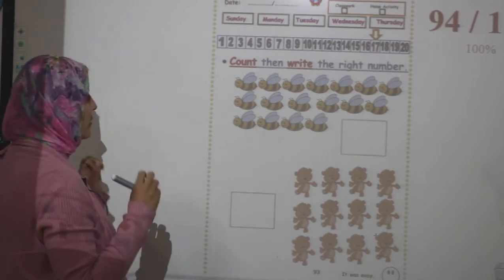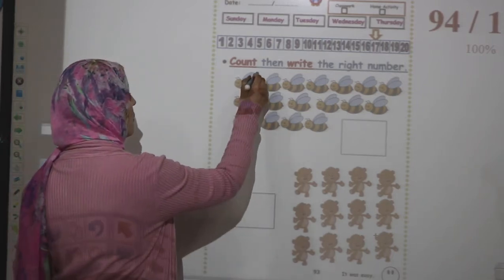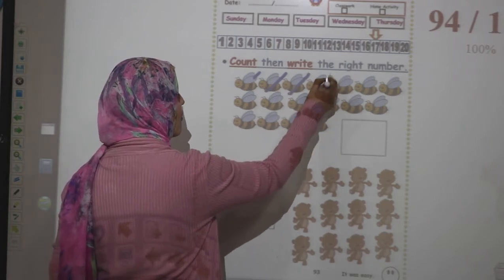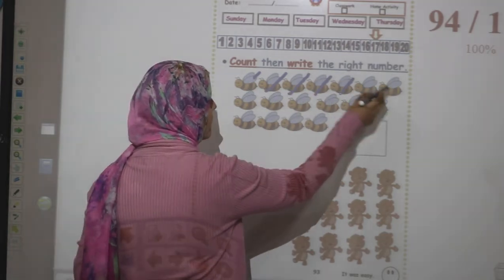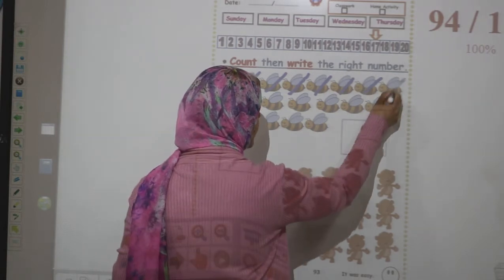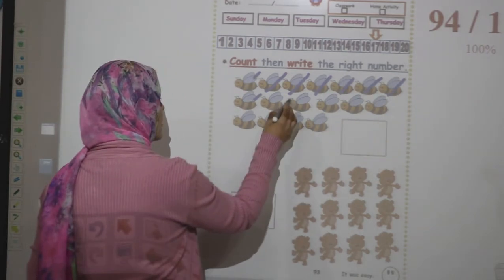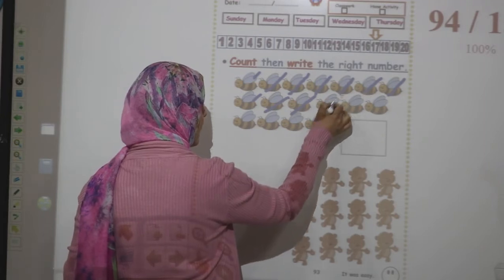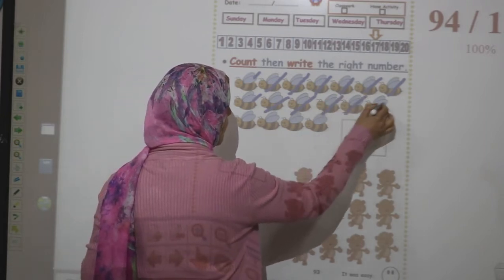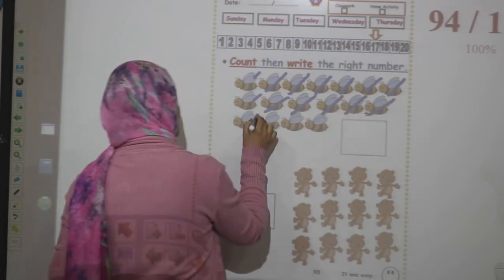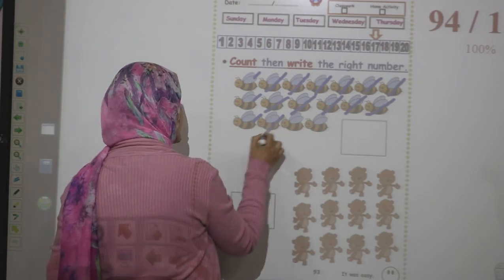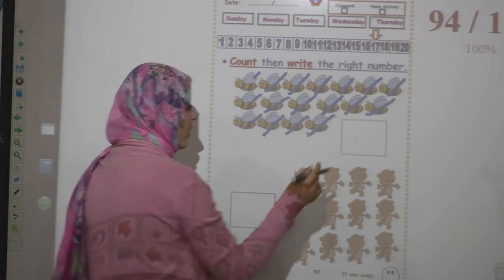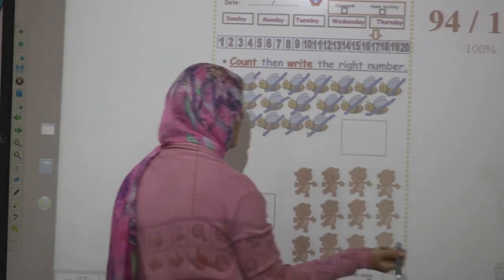Let's count how many bees do you have. One, two, three, four, five, six, seven, eight, nine, ten, eleven, twelve, thirteen, fourteen, fifteen, sixteen, seventeen. Then I have to write here number 17.